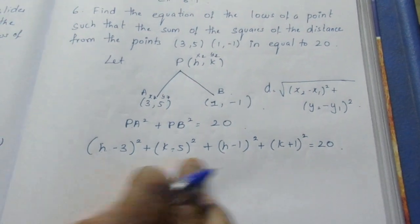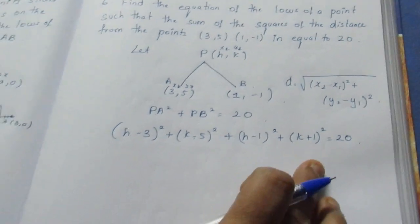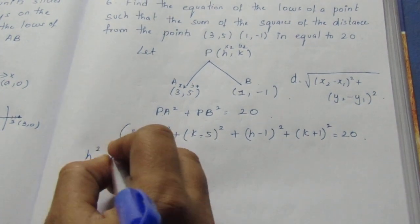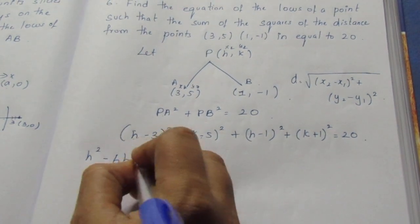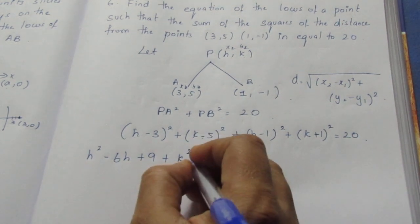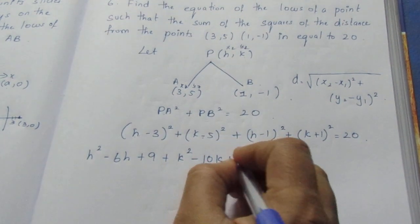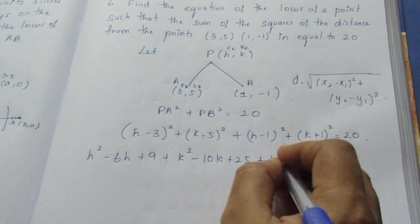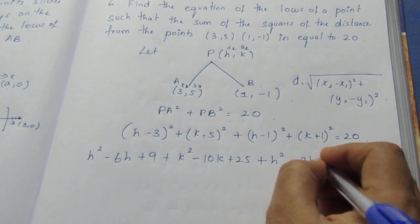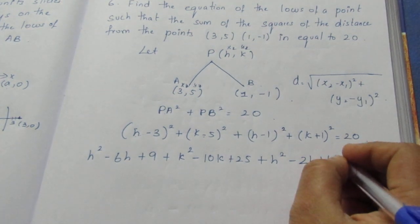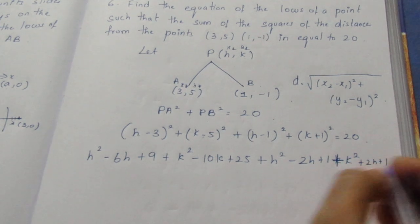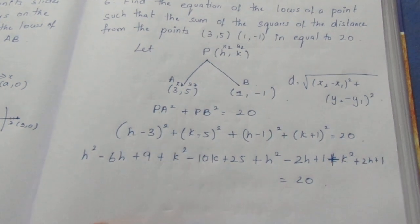Now we expand each term using the (a - b)² formula. So we get: h² - 6h + 9 plus k² - 10k + 25 plus h² - 2h + 1 plus k² + 2k + 1 = 20.